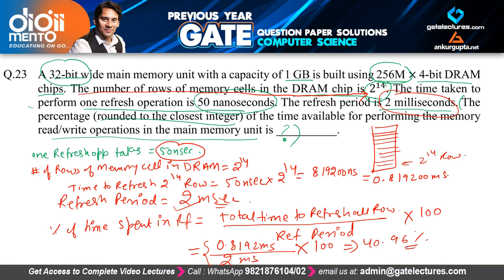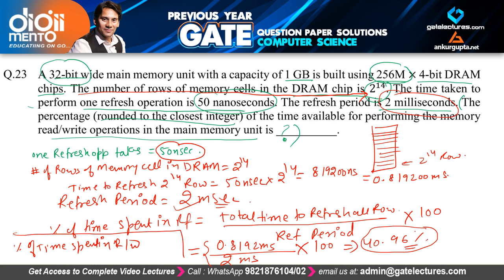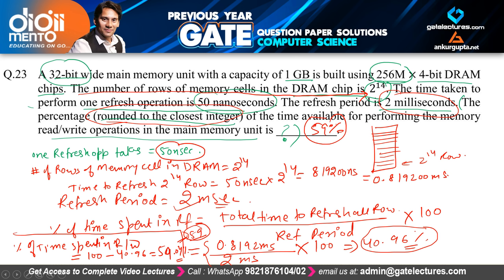Since 40.96% of time is spent on refresh operations, the remaining time available for read/write operations is 100 − 40.96 = 59.04%. Rounded to the nearest integer, the answer is 59%.